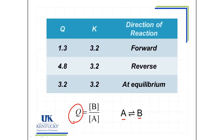The first example we'll look at is when Q is less than K. So here we have a value of Q of 1.3 and K is 3.2. What that tells us is that the value of Q needs to increase in order to reach equilibrium. And for this value to increase, we need the concentration of B to increase and we need the value of A to decrease. And as a result, that means the reaction will proceed in the forward direction. We're consuming A and producing more B.